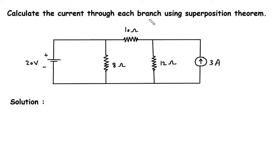Calculate the current through each branch using the superposition theorem. We have to find the current through the 8 ohm, 10 ohm, and 12 ohm resistors using the superposition theorem.